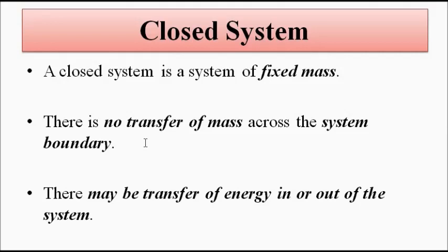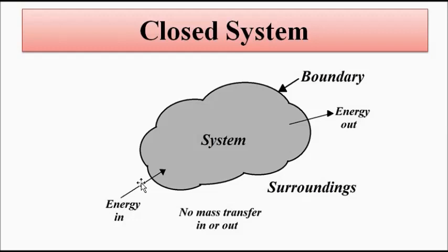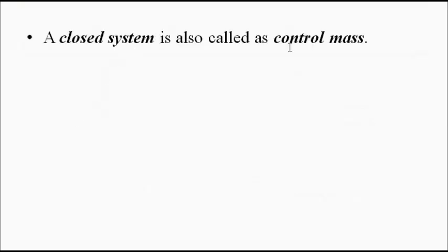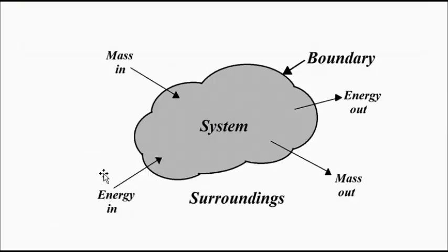A closed system is a fixed mass system, also called a control mass system. In a closed system there is transfer of energy in and out of the system but no mass transfer. In an open system there is transfer of both mass and energy in and out of the system, and it is called a control volume system. We have already discussed these things in the previous videos.